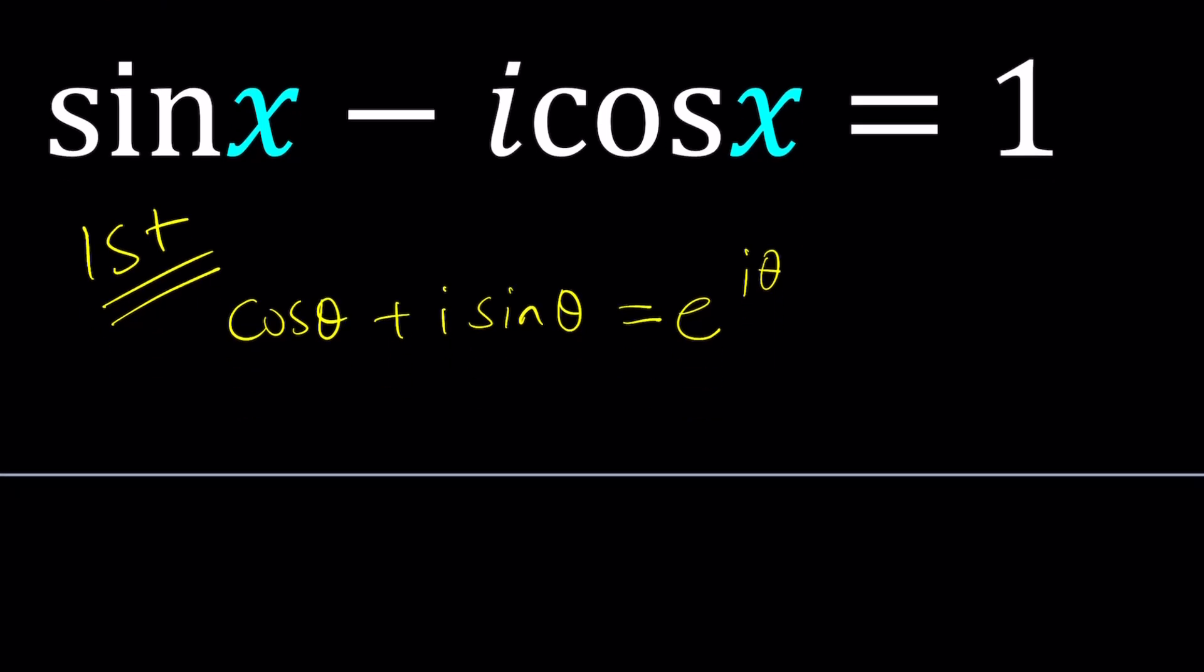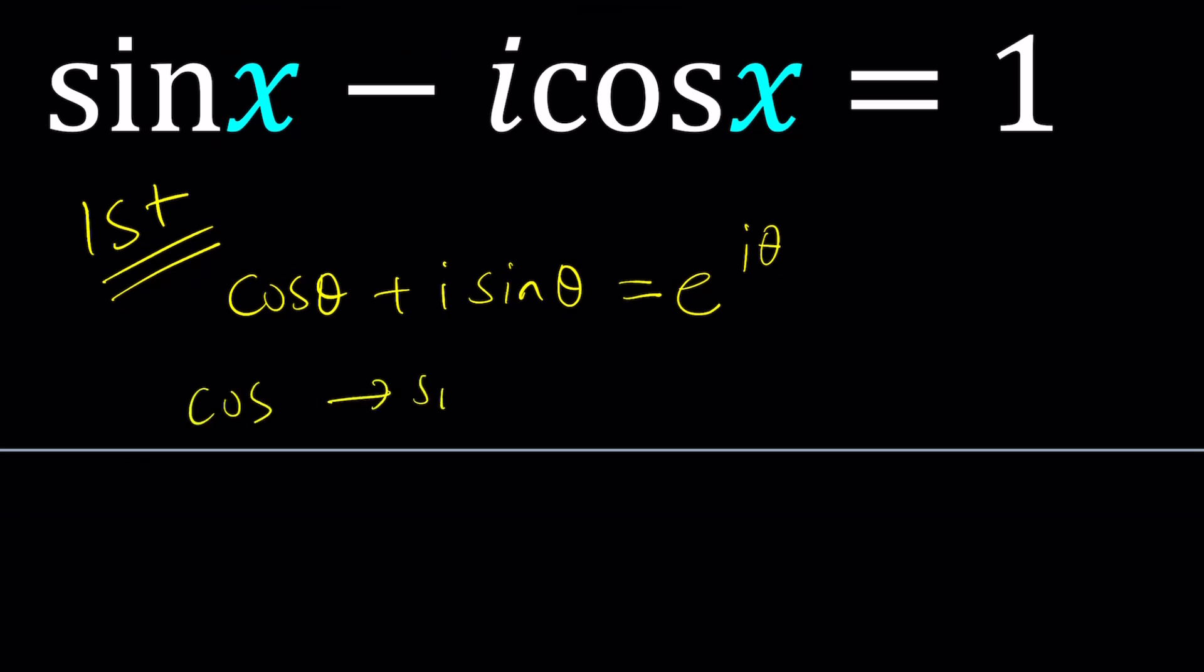Two things. Cosine turned into sine in my equation, and sine turned into negative cosine. You see what I'm saying? They switched around, and also one of them changed the sign. The S-I-G-N sign. So now, how can we achieve this?